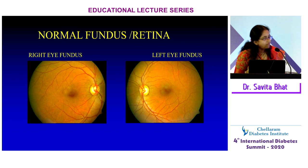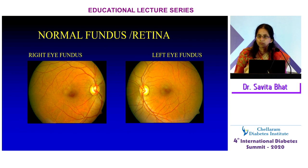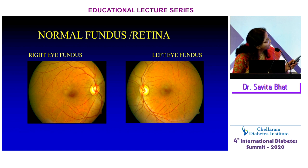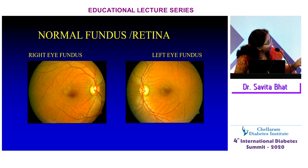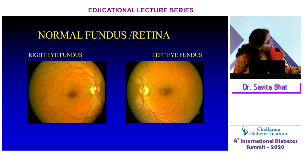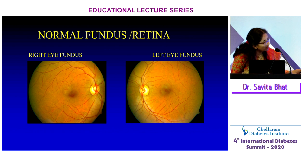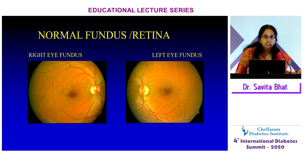How does a normal fundus picture look? I have been specifically asked to keep this topic very simple. This is a picture of a normal fundus. On the left-hand side you can see a right eye fundus. The central dark area represents the macula, and the oval area is the optic nerve. This is a similar picture of the left eye fundus — if the patient does not have diabetic retinopathy, this is how the fundus should look.